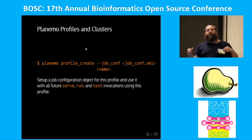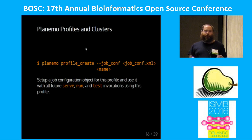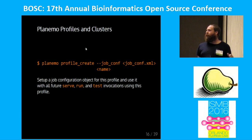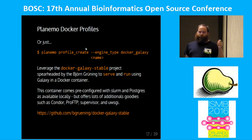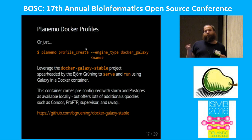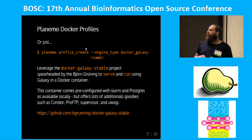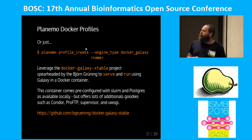Likewise with clusters, Galaxy has a job configuration file — it's actually a very simple XML file to describe how you can talk to your cluster. Galaxy has a plethora of cluster and cloud options. You can do that with Planemo profiles also. Or if you don't have a cluster available or don't want Postgres running on your local machine, you can just use a Docker Galaxy instance — a production-quality Galaxy pre-configured and sitting on Docker Hub, put together by Bjorn Grunen and the Galaxy community. You can use it as a profile option using the new engine type option to Planemo.